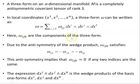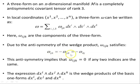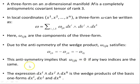Here the omega ijk are the components of the three-form. Due to the anti-symmetry of the wedge product, omega ijk satisfies this relation by changing any two of the indices. So omega ijk is the negative of omega jik — notice i and j have been swapped — and the negative of omega ikj — notice j and k have been swapped. So swapping two indices results in a sign change. This anti-symmetry implies that omega ijk equals zero if any two indices are the same.